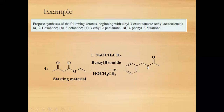For the final example, 4-phenyl-2-butanone: this has one, two, three, four carbons with a phenyl group. Sodium ethoxide forms the carbanion, which is reacted with benzyl bromide. This is then hydrolyzed and undergoes decarboxylation to give 4-phenyl-2-butanone.